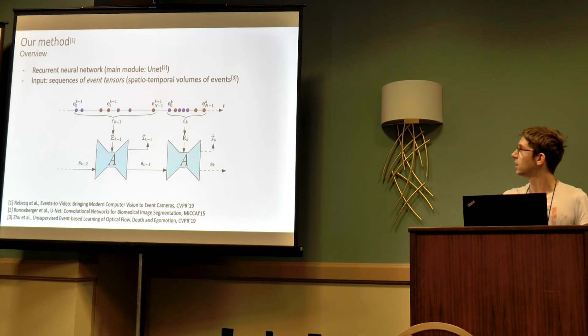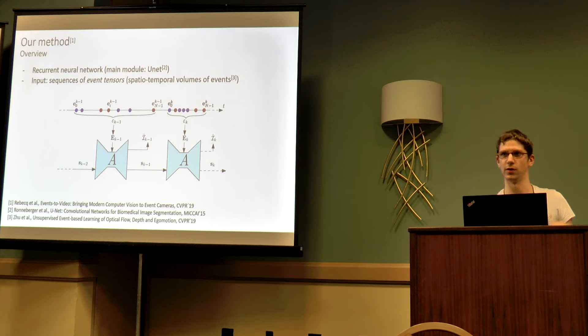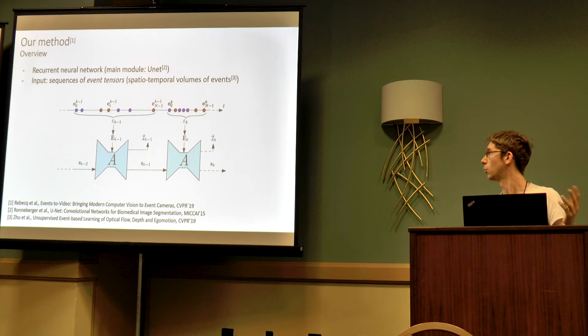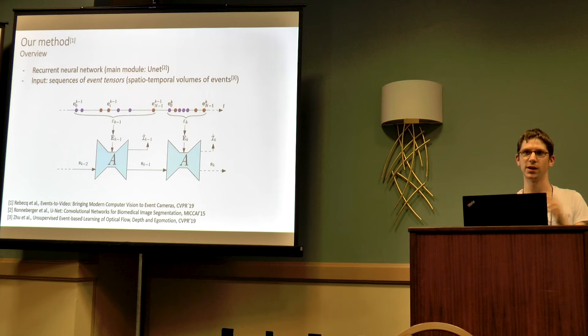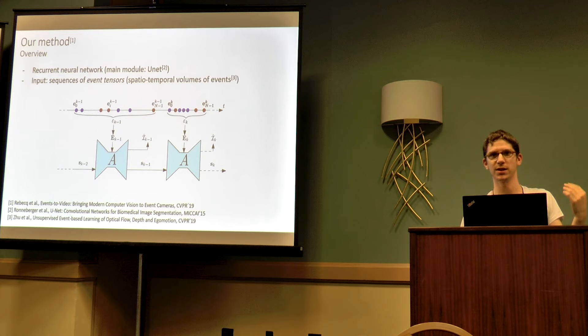Our method is based on a recurrent neural network. It's recurrent because it needs to maintain a state, so it can reason about temporal dependencies of event data. We collect events into small batches and convert them into some representation suitable for the network — for example, a voxel grid, as we've seen this morning. This tensor is then passed to the network, which generates an image reconstruction as well as a state update.